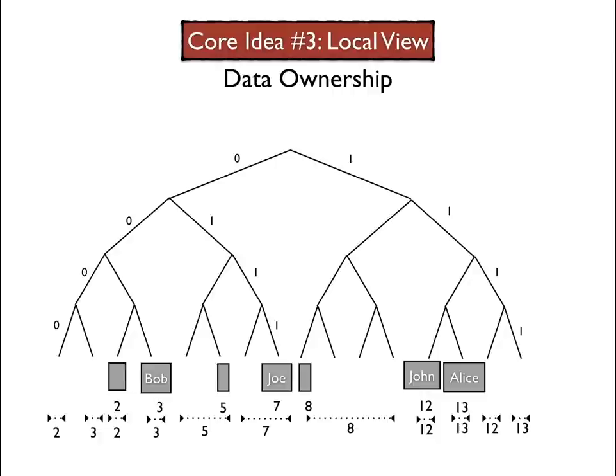And we saw that it creates a useful pattern for assigning data ownership to various nodes in the network. The intuition is that any piece of data that is close, or part of the same subtree as a particular machine will be managed by that machine. So for example, the machine Joe would have ownership of any piece of data that would end up with a hash of either seven or six.